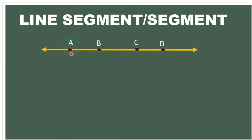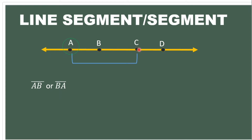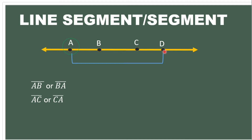From point A to point B, we have line segment AB or line segment BA. Another, from point A to point C, we can form line segment AC or CA. And from point A to point D, we can form line segment AD or DA.